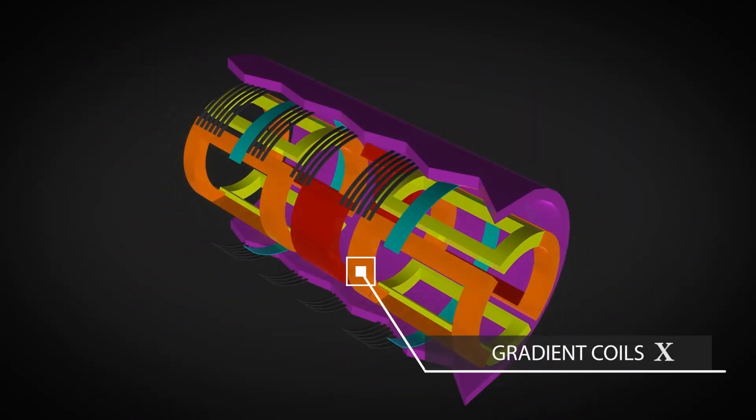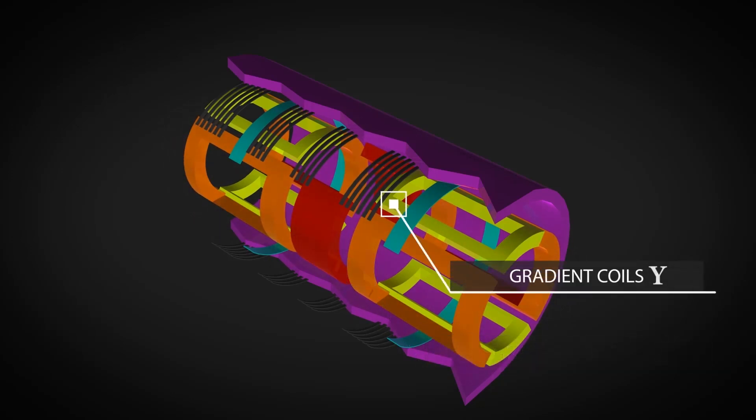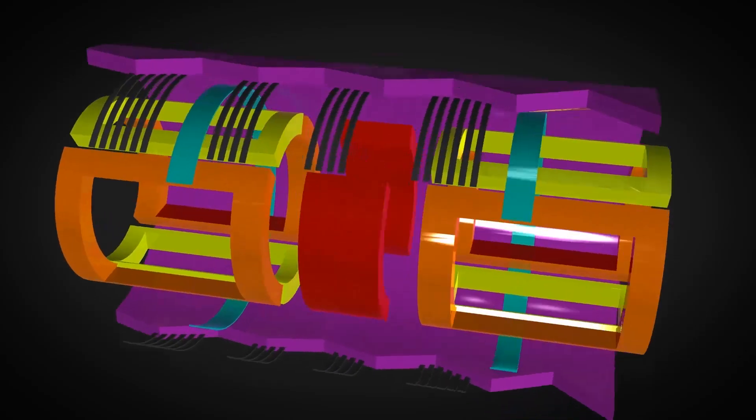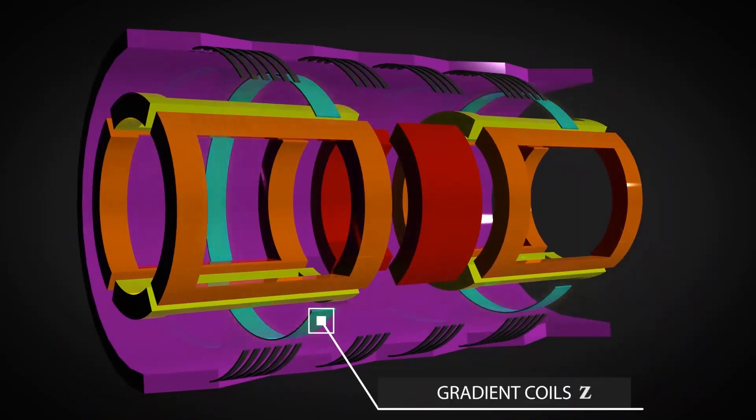X coil creates varying magnetic field from left to right across scanning tube. Y coil creates varying magnetic field from top to bottom across scanning tube. Z coil creates varying magnetic field from head to toe.